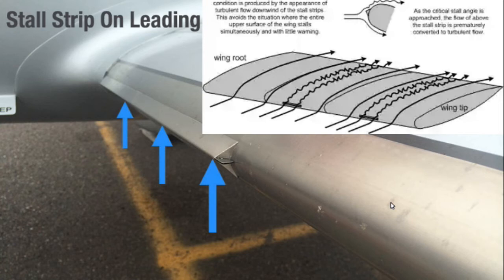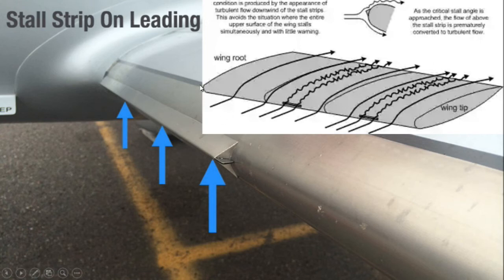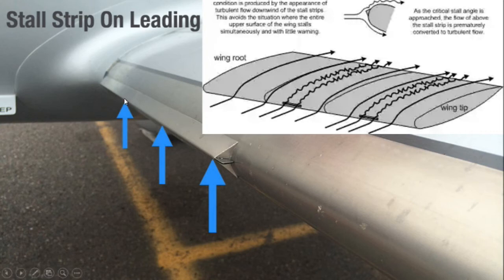Another way to ensure the wing root stalls before the wing tip is with a stall strip — something attached to the leading edge of the wing where you want it to stall first. At a low angle of attack it doesn't do much, but at a high angle of attack close to the critical angle, the airflow splits below the stall strip, which acts like a spoiler and causes the airflow to separate earlier than it normally would. Wherever you put the stall strip will stall first, so designers place it at the wing root. The advantage is that stall strips are cheap and simple compared to twisting the wing, so they're commonly seen on less expensive aircraft.